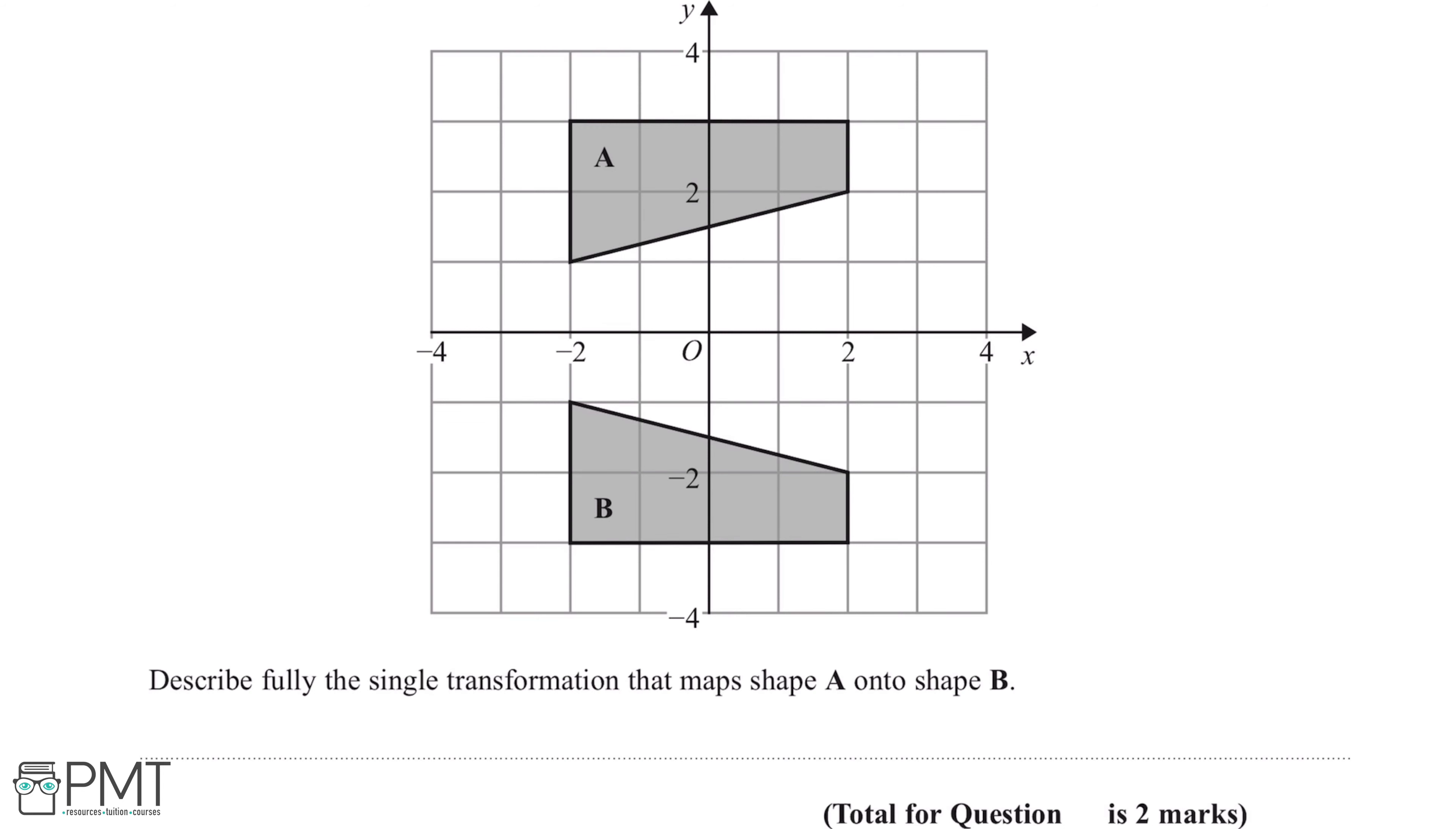So this means that a reflection has taken place, and this can form part of our answer. So the line in which shape A has been reflected in is this line here, which is the x-axis. So in our answer we'll need to include that the reflection has taken place on the x-axis.